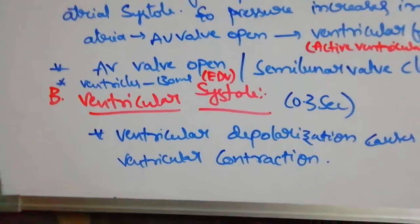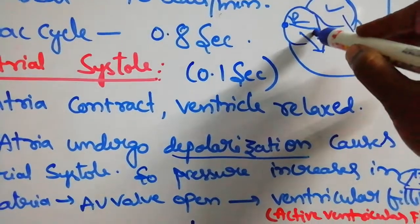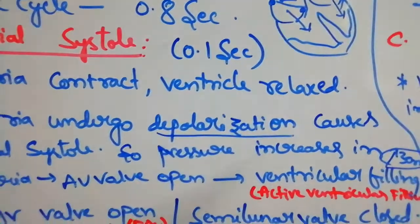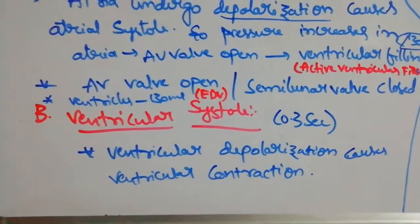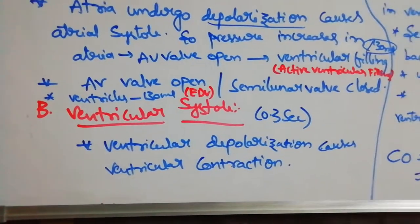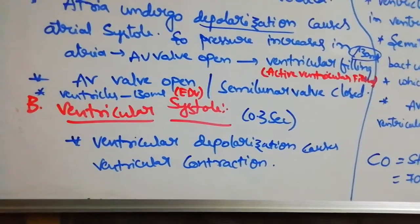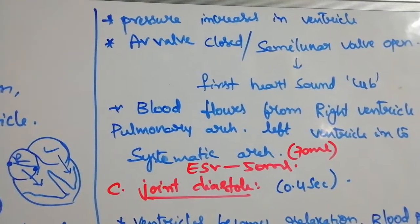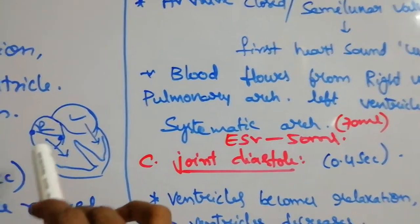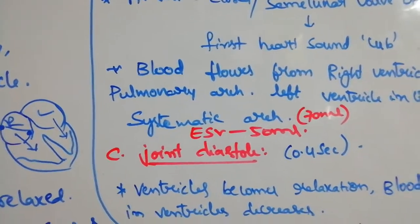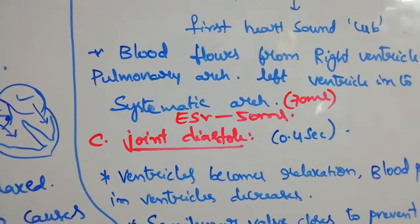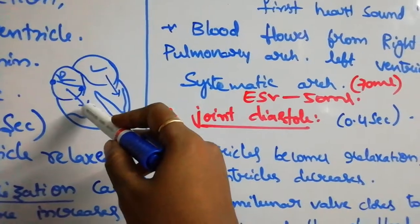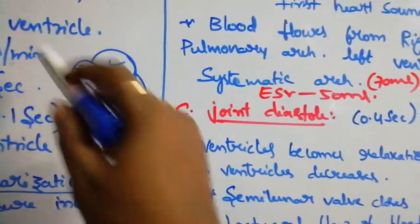Next is ventricular systole, which takes place in 0.3 second. The impulse passes from the AV node through the AV bundles, bundle branches, and Purkinje fibers, causing ventricular depolarization and contraction. As pressure increases in the ventricle, the AV valves close to prevent backward flow and the semilunar valves open. The closing of AV valves produces the first heart sound 'lub.' Blood then moves from the right ventricle to the pulmonary arch and from the left ventricle to the aortic arch.